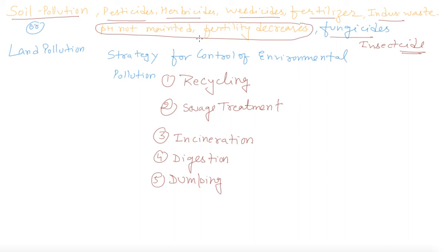The pH is not maintained and sunlight is not reaching properly. In this way, land pollution is mainly caused by pesticides, which are used to kill or stop the reproductive process of unwanted organisms. But the use of pesticides has harmful effects on human health through contaminated food and water.